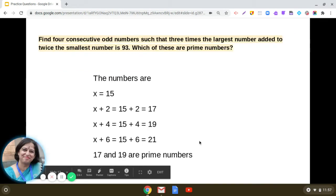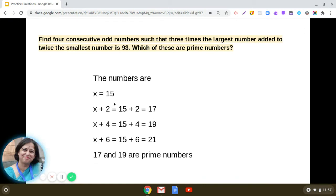Now the four consecutive odd numbers will be 15, and then x plus 2, that is 15 plus 2 is 17. Next, x plus 4, that is 15 plus 4 is 19. Then x plus 6, that is 15 plus 6 is 21. So this is how we get the four odd numbers.